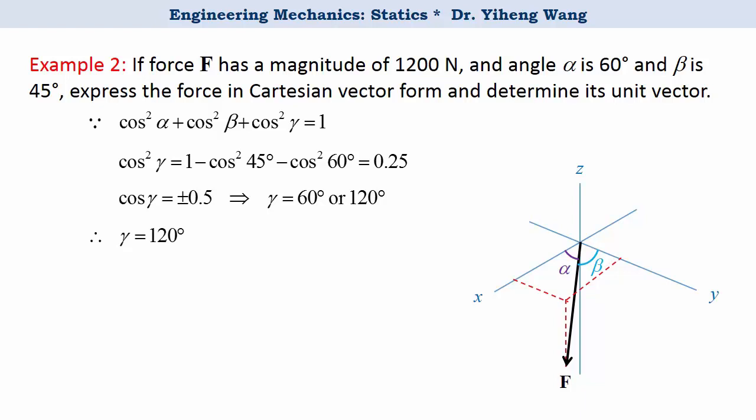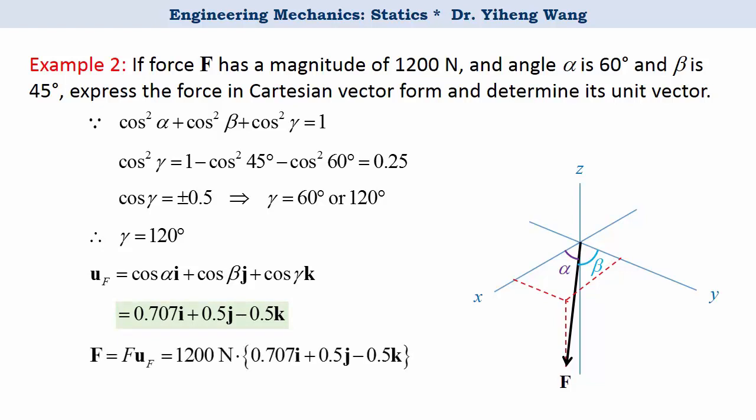From here we can determine its unit vector by plugging in the values of cosine alpha, beta, and gamma. And then we can determine the Cartesian form of this force vector by multiplying its magnitude to its unit vector. As you can see, the unit vector is dimensionless, but the force vector does have the unit of Newton. And this answers the problem.